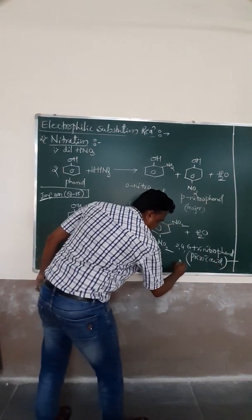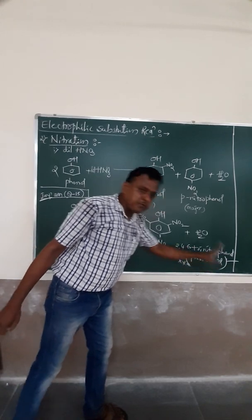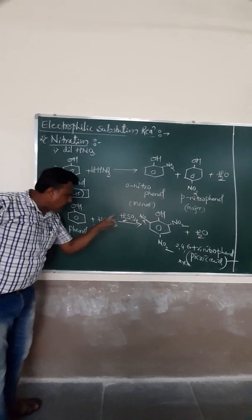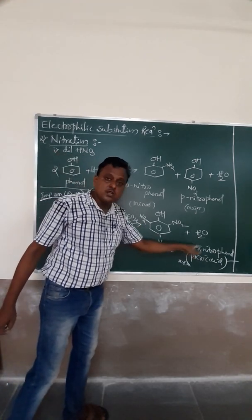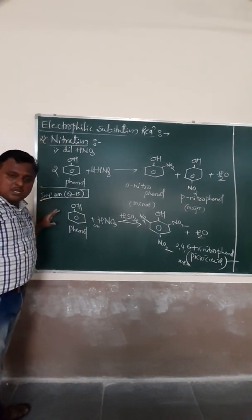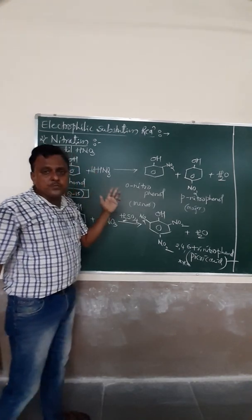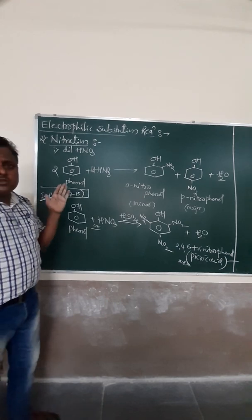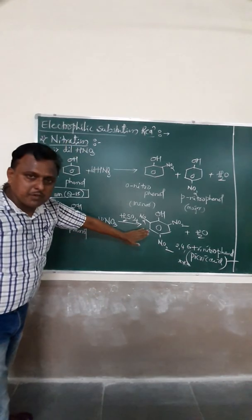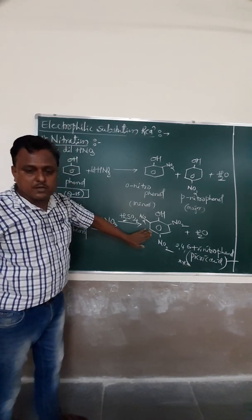You must remember: picric acid is 2,4,6-trinitrophenol. This is question number 15 in annual examinations — they ask how to prepare picric acid from phenol, or how to prepare 2,4,6-trinitrophenol from phenol. Your answer is: when phenol reacts with nitrating mixture (concentrated HNO₃ + H₂SO₄) it forms 2,4,6-trinitrophenol. This is a major part of your syllabus.